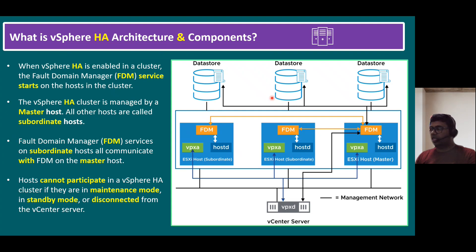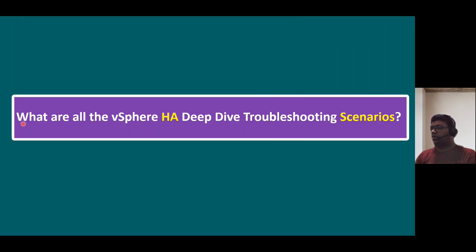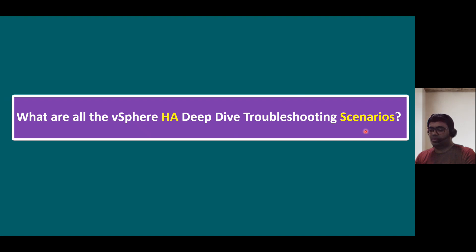Now let's talk about the main troubleshooting scenarios for vSphere High Availability. When you understand the scenarios, whether in an interview or a real-time situation when you're attending to HA alerts, understanding the concepts makes it easy to know where to start troubleshooting.